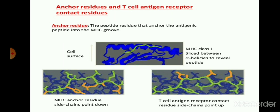The peptide residue that anchors the antigenic peptide into the MHC groove is called the anchor residue. The MHC class 1 slides between the alpha helices to reveal the peptide. This peptide present on the MHC class 1 molecules recognizes self and non-self. This residue then binds with the T cell antigen receptor and recognizes whether it is self or non-self.